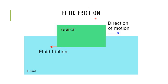Fluid friction: we know air is very light and thin, yet it exerts frictional force on objects moving through it. The frictional force exerted by fluids is called drag. The object moves in one direction and the fluid friction acts in the opposite direction. The frictional force on an object in a fluid depends on its speed with respect to the fluid, the shape of the object, and the nature of the fluid.